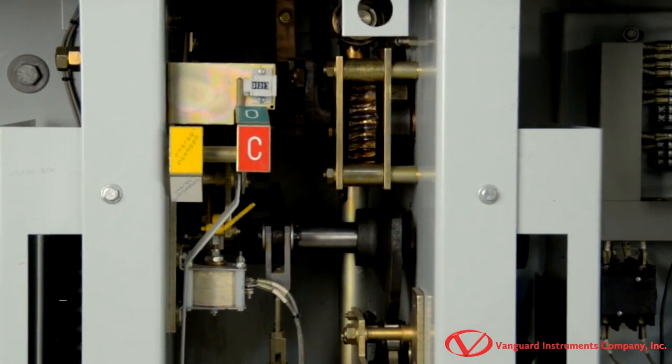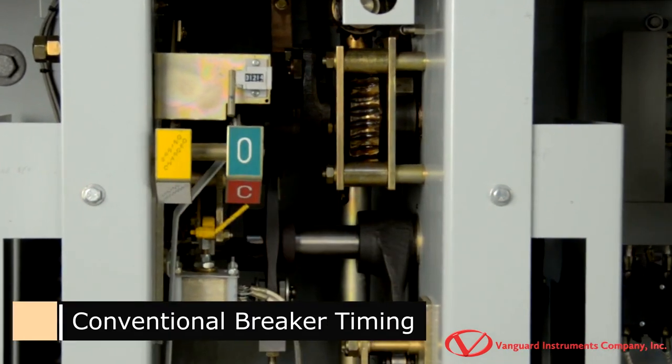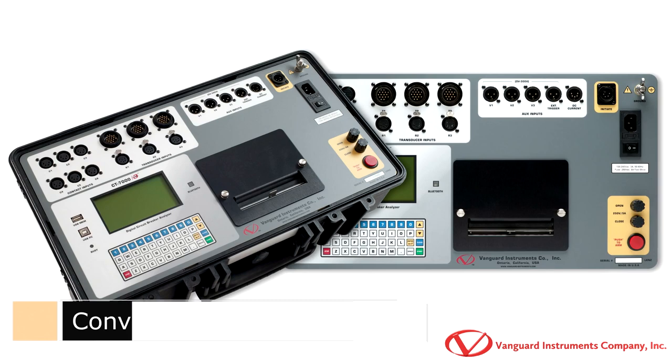In this section, we'll go over the steps to perform a conventional circuit breaker timing test with the Vanguard CT7000 S3.